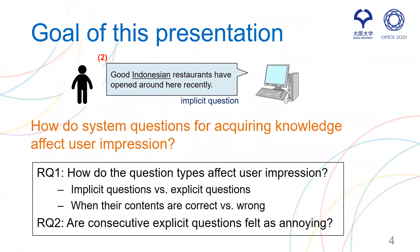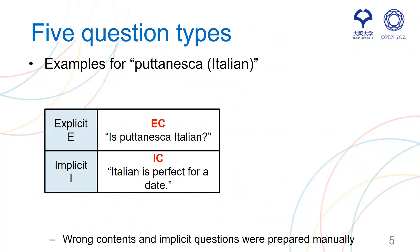So the goal of this presentation is to investigate how system questions for acquiring knowledge affect user impressions. We will answer the following two research questions. The first one is how the question type affects user impression. We will compare implicit questions and explicit questions, and when their contents are correct and wrong — this is required because the estimated content is actually often wrong. The second research question is whether consecutive explicit questions are felt as annoying or not. To investigate these research questions, we prepared five question types.